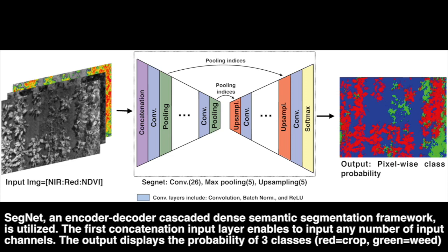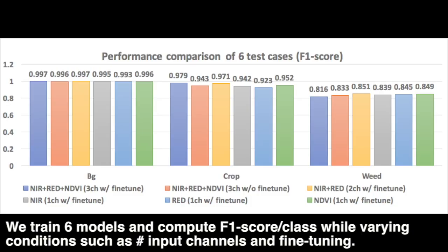Blue corresponds to the background. Red and green represent crop and weed, respectively. For quantitative study, we use two performance metrics: F1 score and Area Under the Curve, AUC.